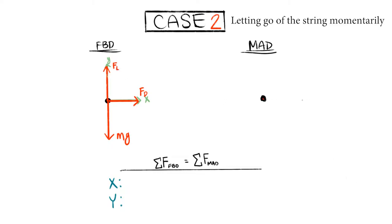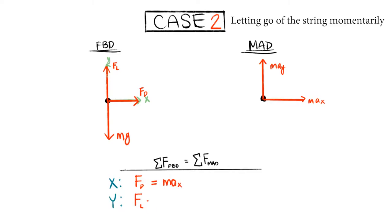For the MAD, the kite moves along the angle theta in the opposite direction of the missing tension force — this is the sole force on the MAD. This force can also be split into components, MAX and MAY. Summing forces in x: drag equals MAX. Summing forces in y: lift minus weight equals MAY.